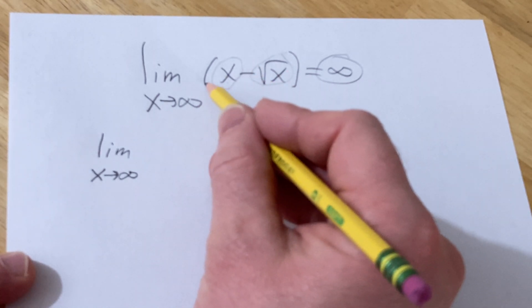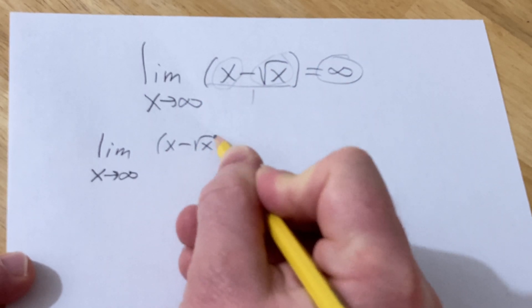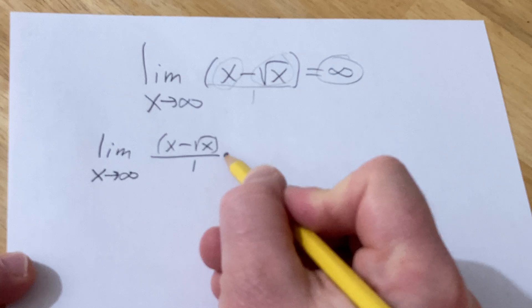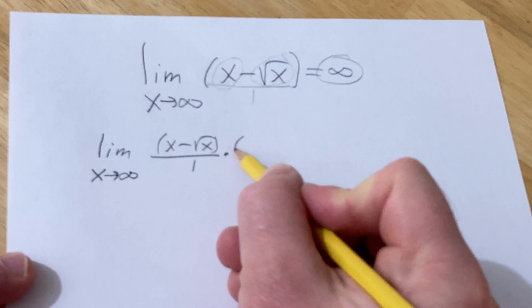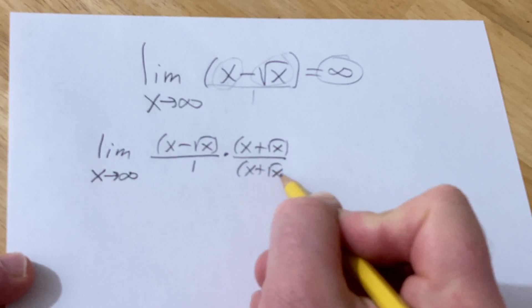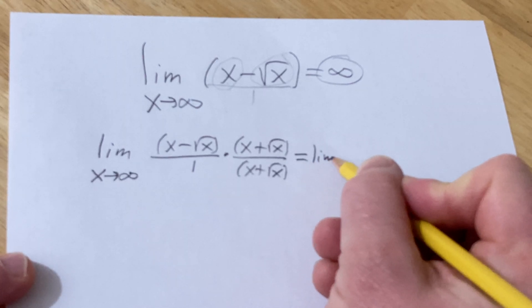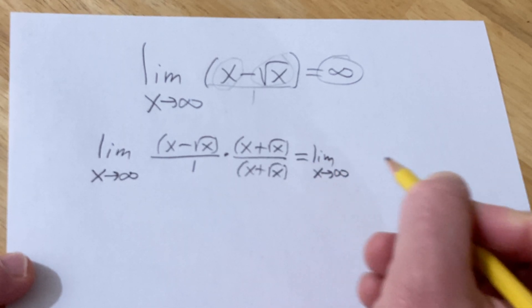So the trick is to think about this as a fraction over 1. And then you can rationalize, basically multiplying by x plus the square root of x, just switching the sign, basically multiplying by 1. And this is the limit as x approaches infinity.